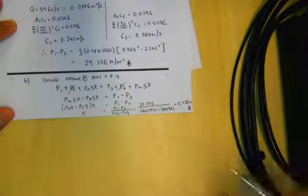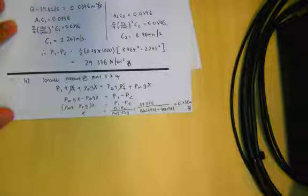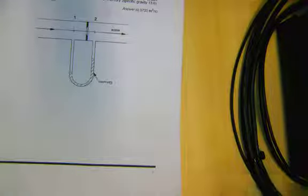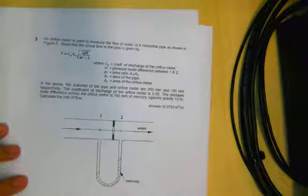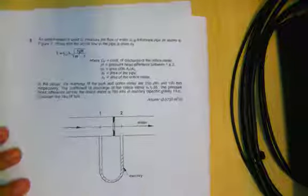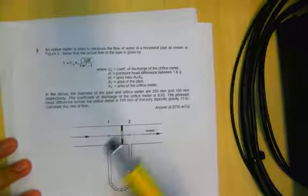The strategy is the same: consider the pressure at the same height of the same fluid at points 3 and 4. Plug in the values, make X the subject, and substitute the values on the right side. That's it for question number 2.